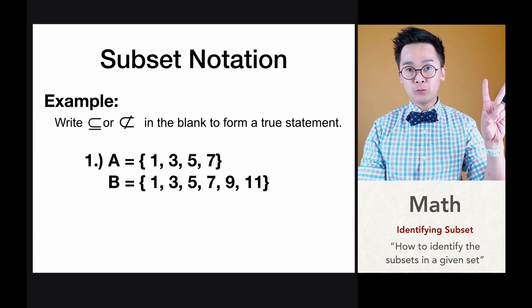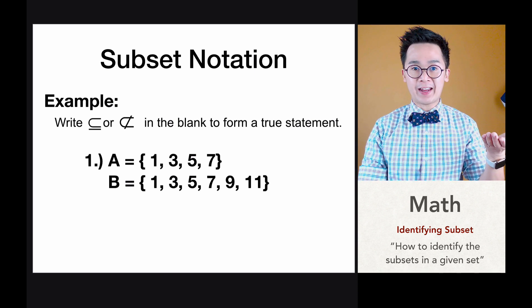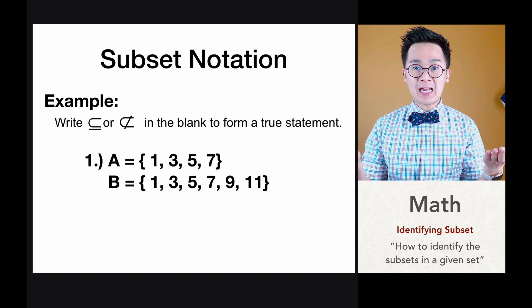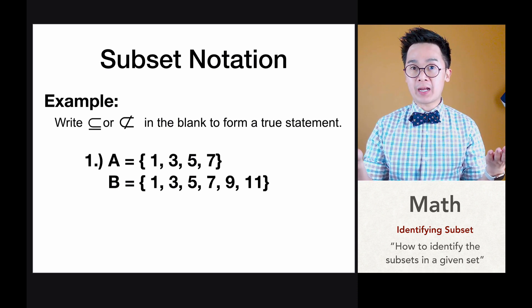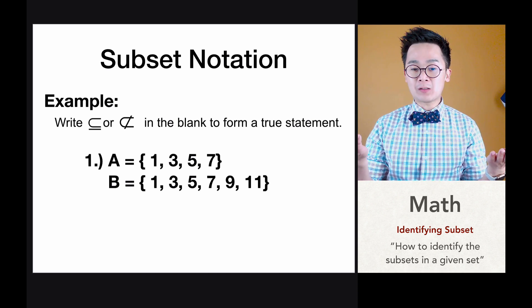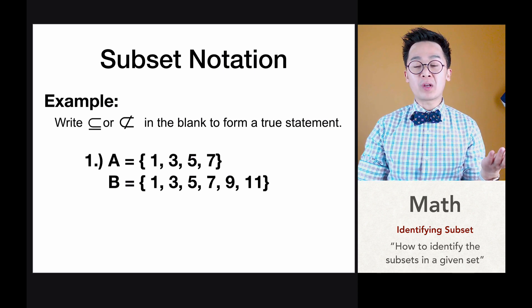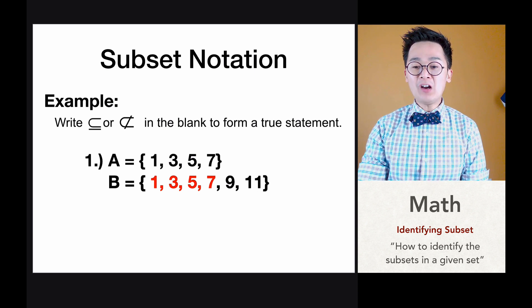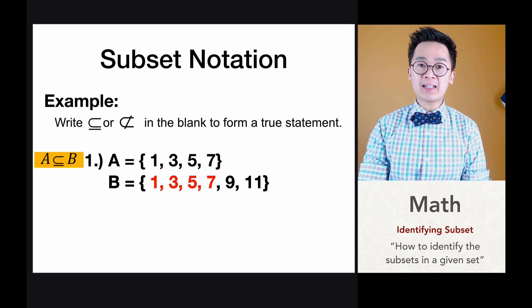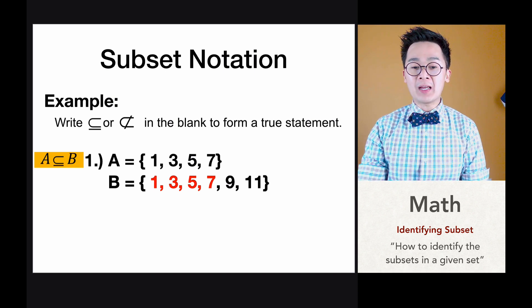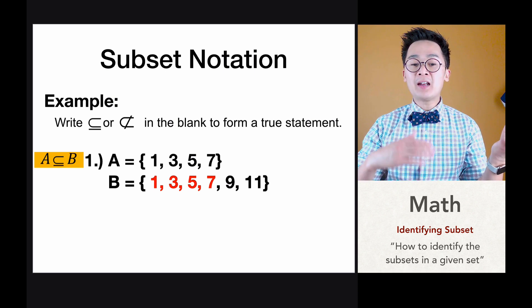For number one, we have two sets. We have set A which is {1, 3, 5, 7} and we have set B which is {1, 3, 5, 7, 9, 11}. You will notice that set B has more elements — 1, 3, 5, 7, 9, 11 — while set A only has 1, 3, 5, 7. Since 1, 3, 5, 7 can also be found in set B, therefore set A is a subset of set B because we can find all the elements of set A in set B.